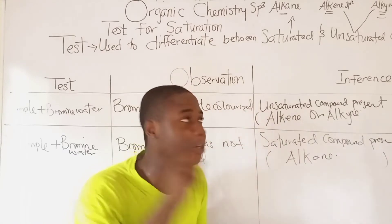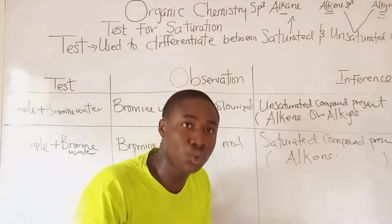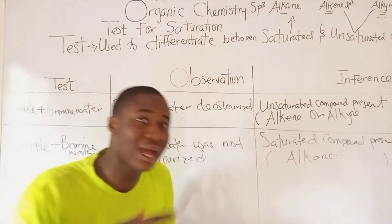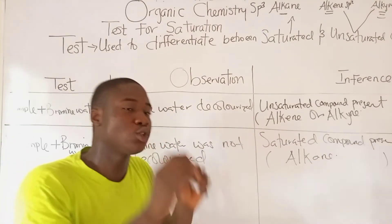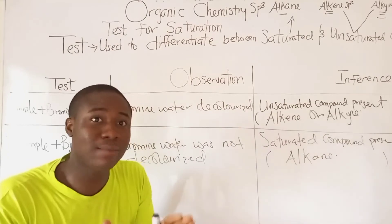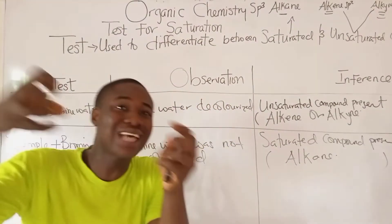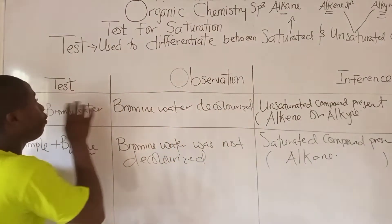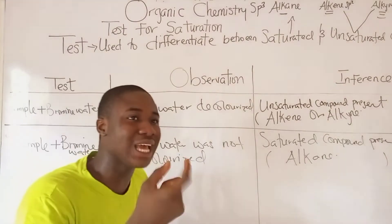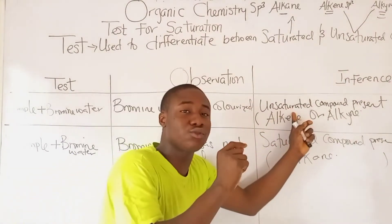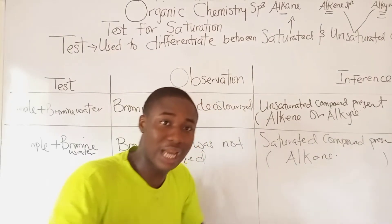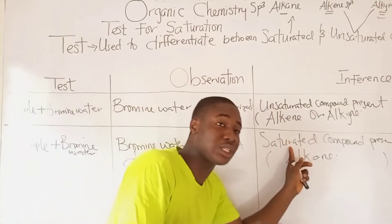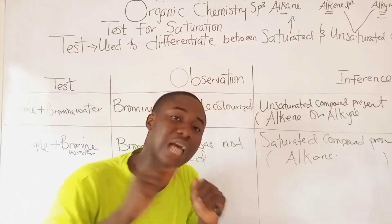How do we now differentiate between alkenes and alkynes? We don't differentiate them by the bromine water reaction — we differentiate them with other kinds of reactions. When bromine water is decolorized, there's an unsaturated compound present (alkene or alkyne). When bromine water is not decolorized, a saturated compound — alkane — is present.